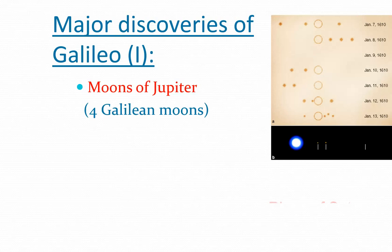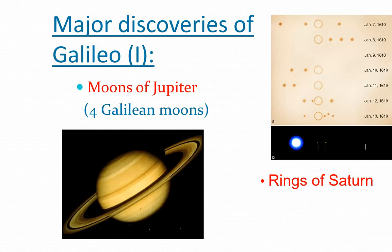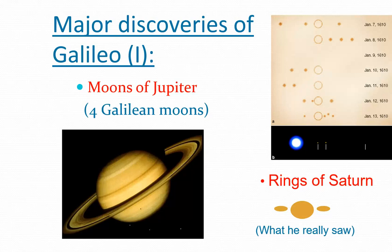He also observed the rings of Saturn, though his telescope didn't have the resolution to see them clearly as we can today. He offered people the chance to look through his telescope, but a lot of people refused — saying it was a tool of the devil that would bewitch them and make them deny their God. He met opposition because people knew this didn't agree with their theological view.